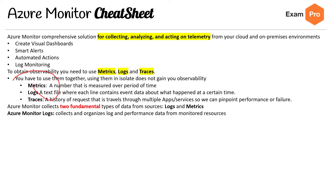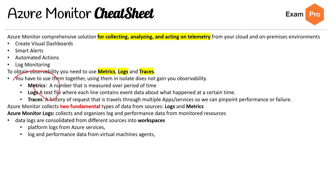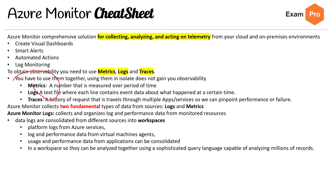Azure Monitor Logs collects and organizes log and performance data for monitoring resources. Data logs are consolidated from different sources into workspaces — platform logs, Azure services logs, performance data, and virtual machine agents. Usage and performance data for applications can be consolidated in a workspace and analyzed together using a sophisticated query language. You can work with log queries and their results interactively using Log Analytics.